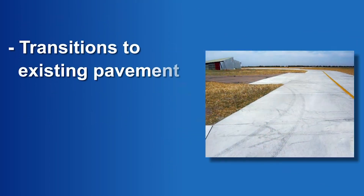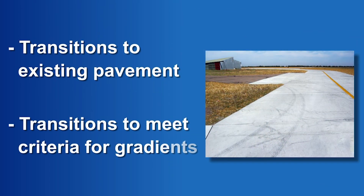When considering a rigid overlay, consider the transitions to existing pavement structures and the impact on drainage. It may be necessary to remove sections of existing pavement beyond the area of distressed pavement to meet criteria for airport pavement gradients.